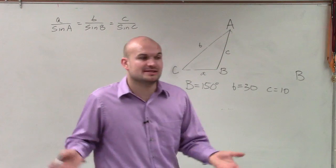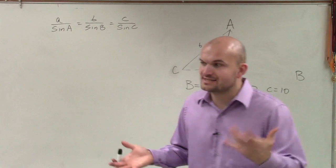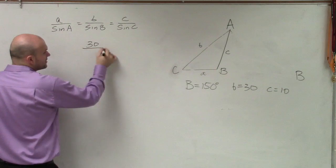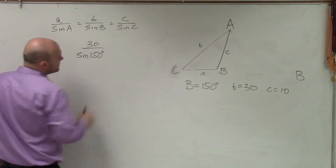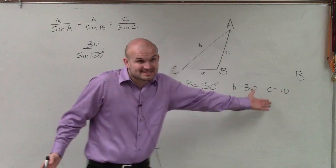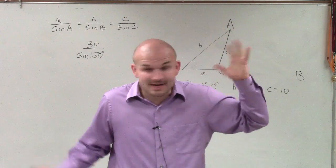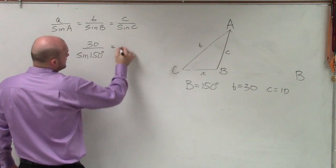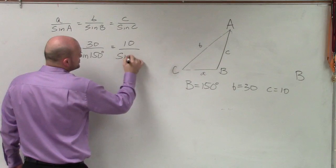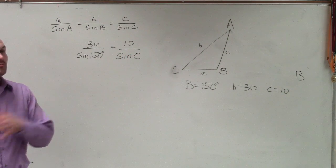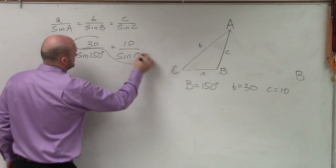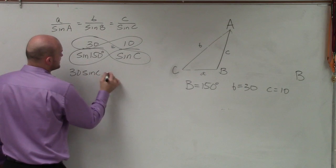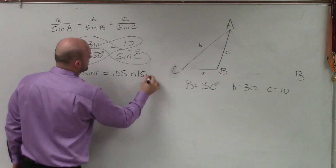All we need to make sure when applying the law of sines is that we have a ratio with a side length and an angle, which in this case we do. We know that the side of B is 30 over the sine of 150. The only other information I have is C, so I can only use C. The only thing I know about C is its side length, which is 10, and I need to solve for the angle. Apply cross multiplication: 30 sine of C equals 10 times sine of 150 degrees.